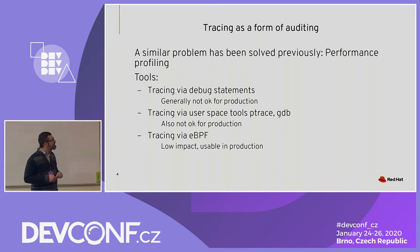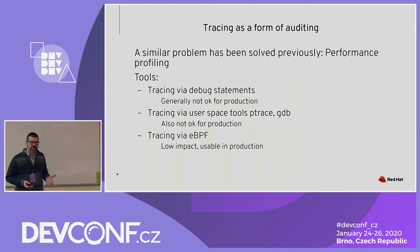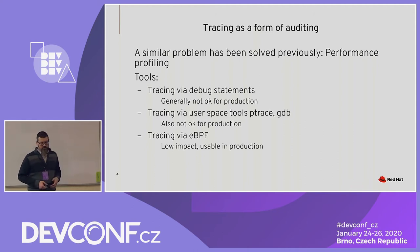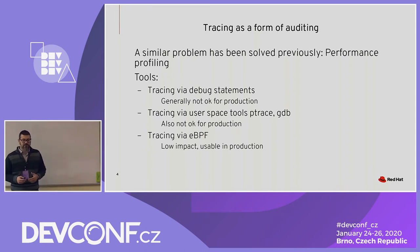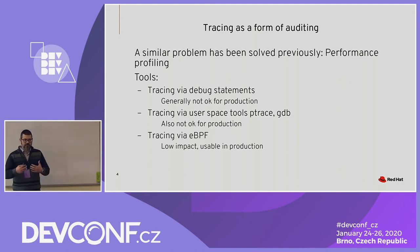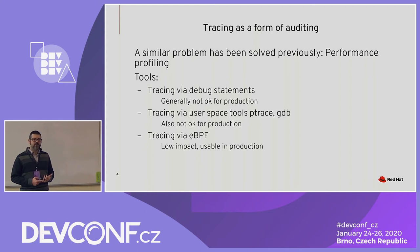I thought about another area of computing with a similar problem — they want to trace what's happening in programs, generally for performance. Tools used include tracing through debug statements, which is the same problem as logging: you can't really do it in a library because you'll interfere with the program, and especially you cannot use it in production. You can use tools like ptrace, things like GDB, that actually intercept the program, but again it's not okay for production, and you'd have to intercept every single program in your system and wrap it in GDB.